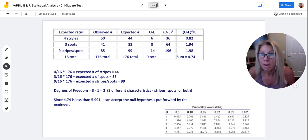So now if I add all of this up from what I observed, I got 50 with stripes, I got 41 with spots, and I got 85 with stripes and spots. So that's 176 total.